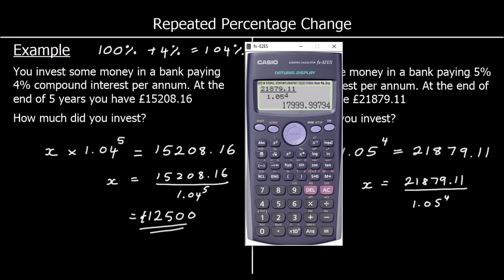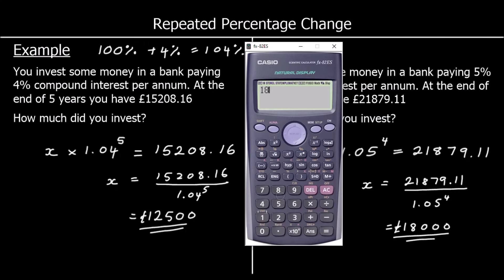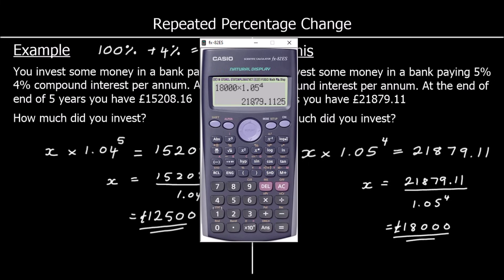So that's going to round up and that's £18,000. You can check your answer by starting with £18,000 and adding on 5% four times. So if I did £18,000 times 1.05 to the power of 4, I would get to £21,879.11.